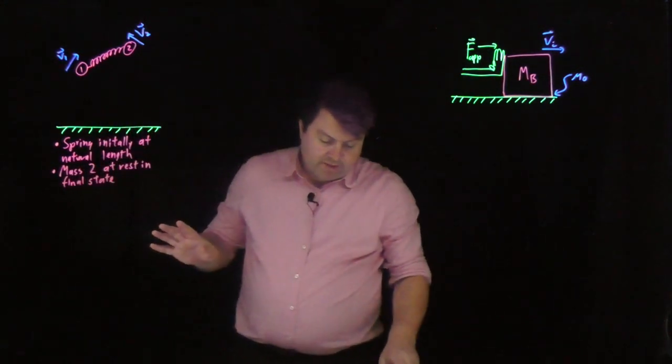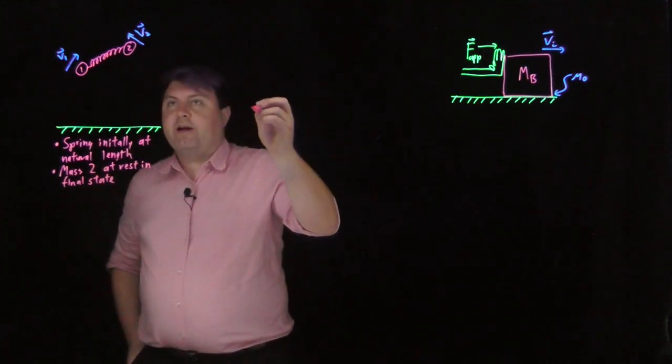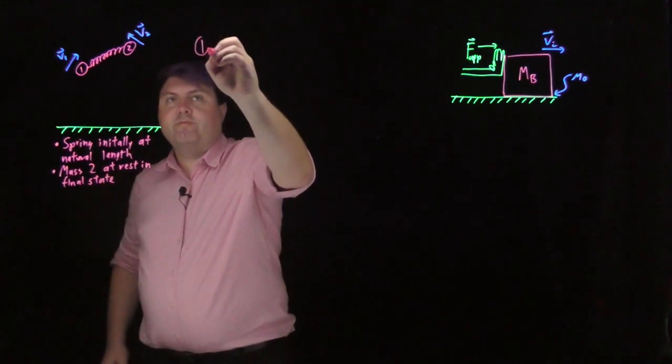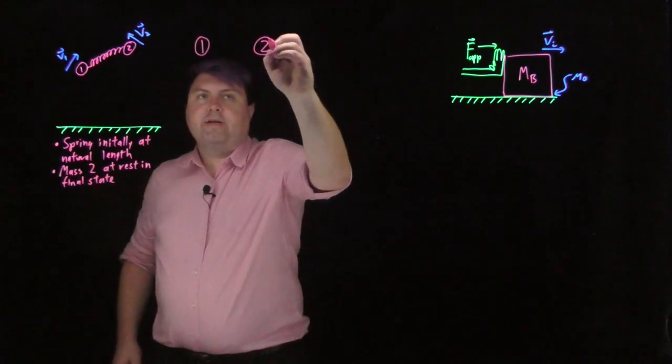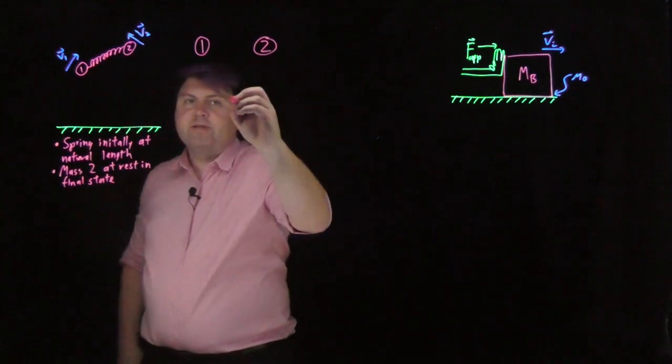So, we're given all of this, but next to do is to draw an interaction diagram. Our interaction diagram is going to look like mass one, mass two, and our last object that is interacting with them is the Earth.